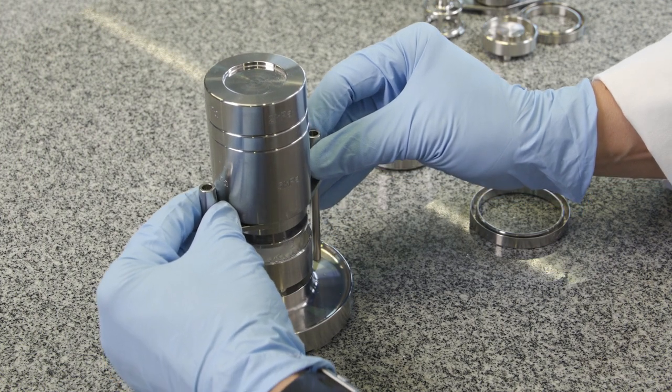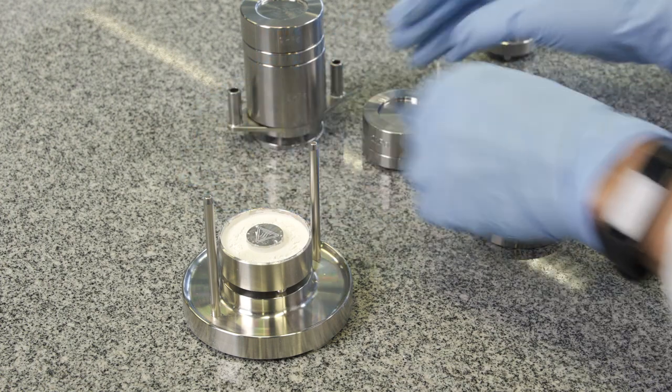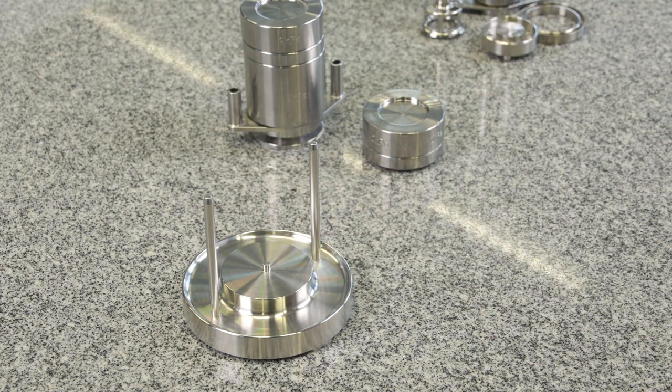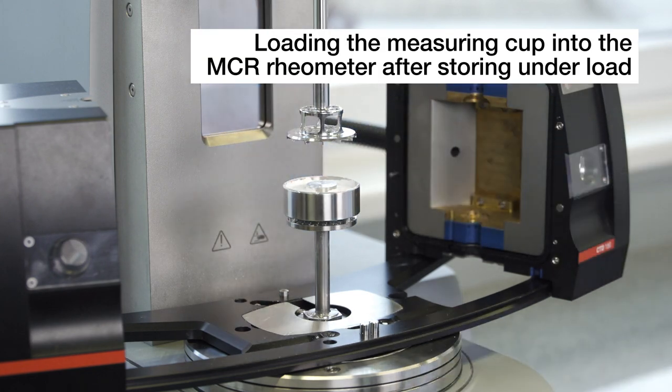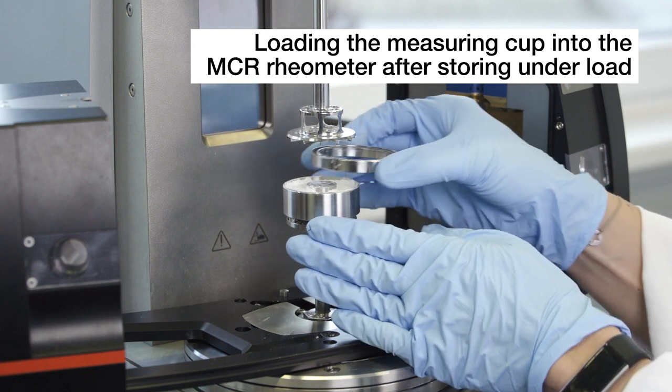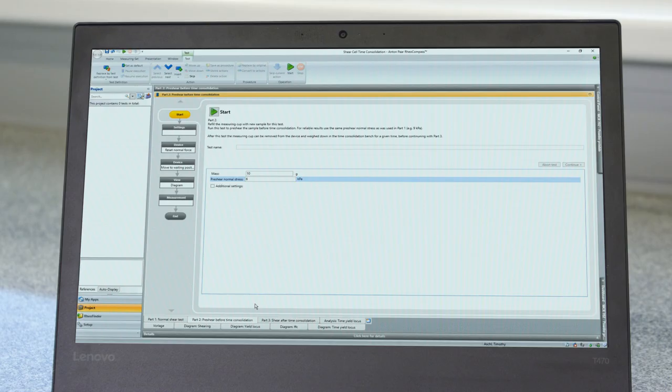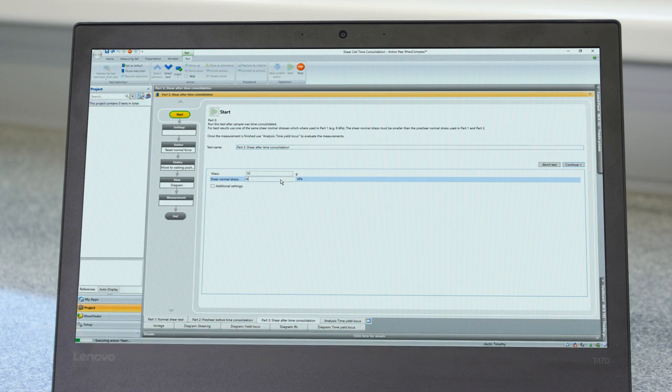Remove the weights and put the cup into the device again. The measurement parameters for the shear after time consolidation can be set in the tab Part 3.